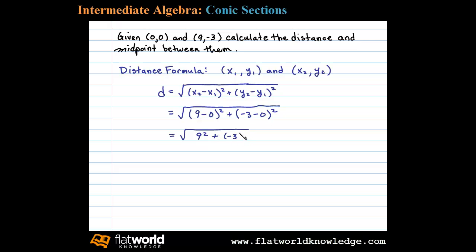Simplifying further, 9 squared is 81, 81 plus -3 squared or 9, and that equals the square root of 90.